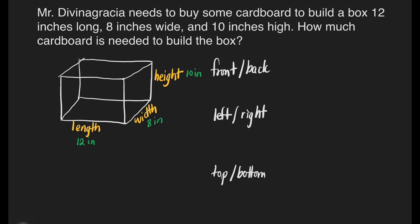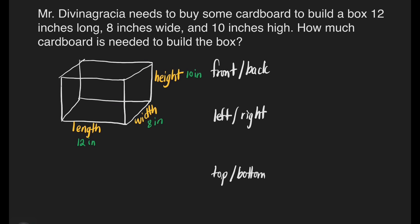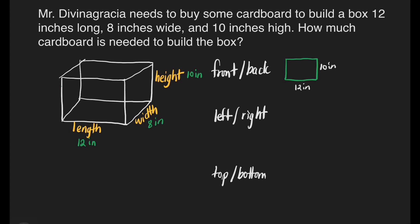As mentioned, we have six faces: front and back, which are identical; left and right, also identical; and top and bottom, also the same size and shape. For the front and back, the length is 12 inches and the height is 10 inches. That's going to be 12 times 10 times 2. 12 times 10 is 120, times 2 is 240 inches squared. This is for our front and back.